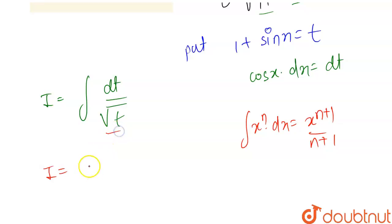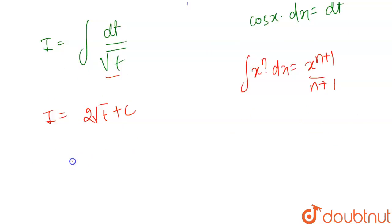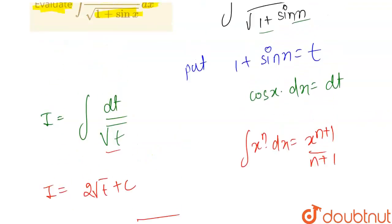So here, I becomes equal to 2 square root of t. Now we have put t as 1 plus sine x, so put the value here: 2 square root of 1 plus sine x plus c. So this is our answer for the above integral.